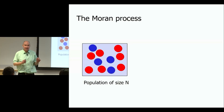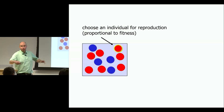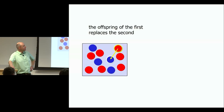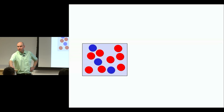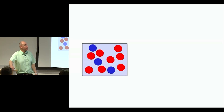A simple stochastic description I like to use is the Moran process, proposed by Australian population geneticist Moran in the 1950s. We have a population of size N, we choose an individual for reproduction proportional to some fitness value, then choose another one for death. The first makes an offspring that replaces the second — that's one step. It's like an urn in probability theory: you take a ball, reproduce it, remove one, and the total population remains constant. Different colors can have different values of being chosen for birth or death.